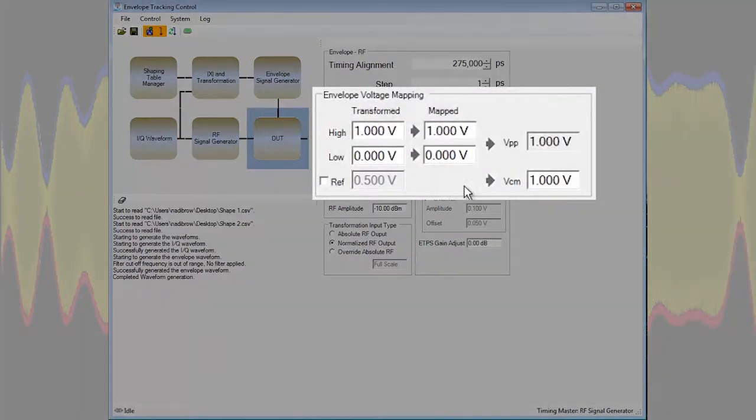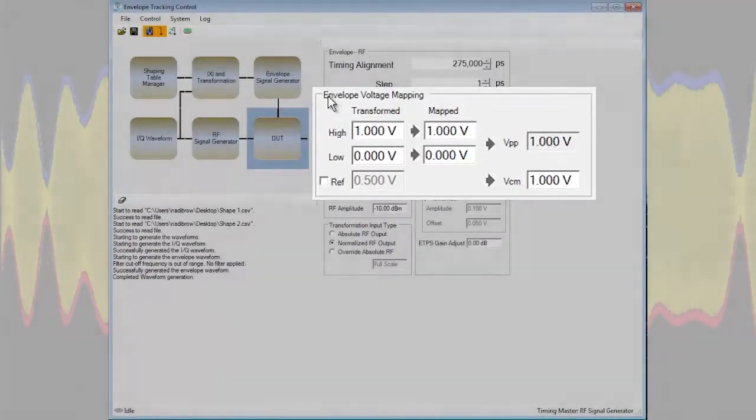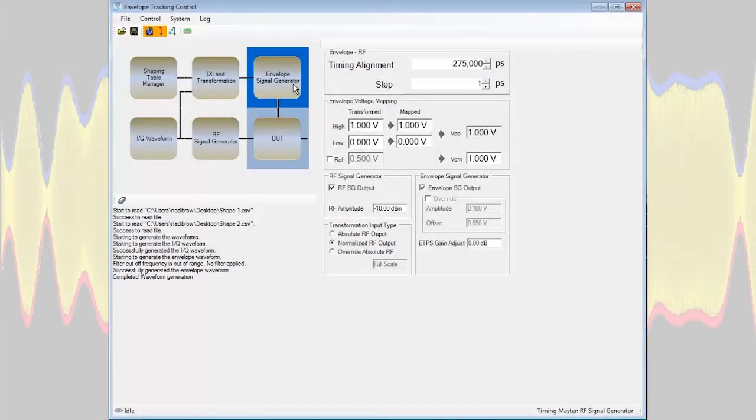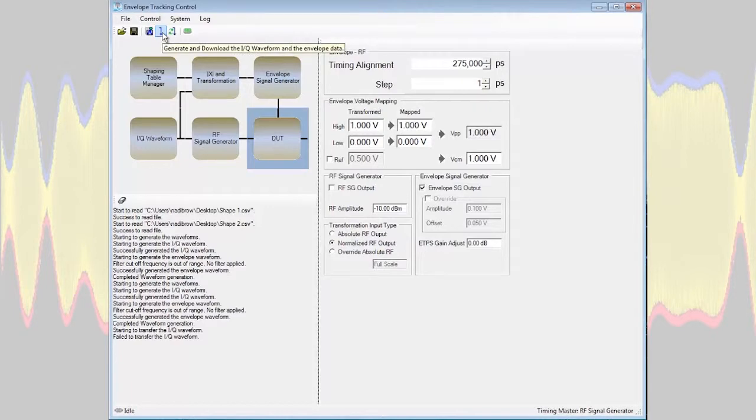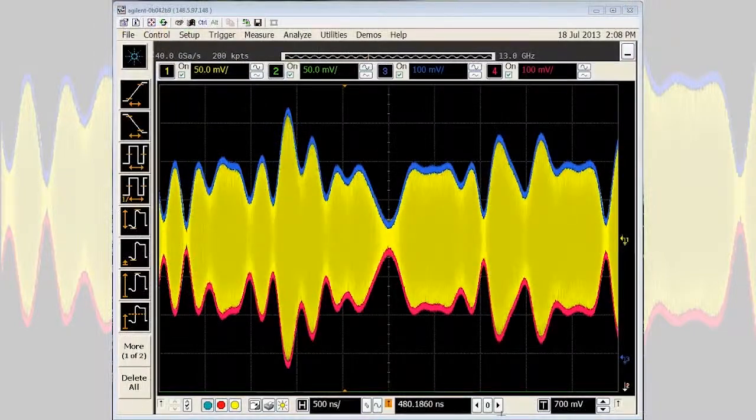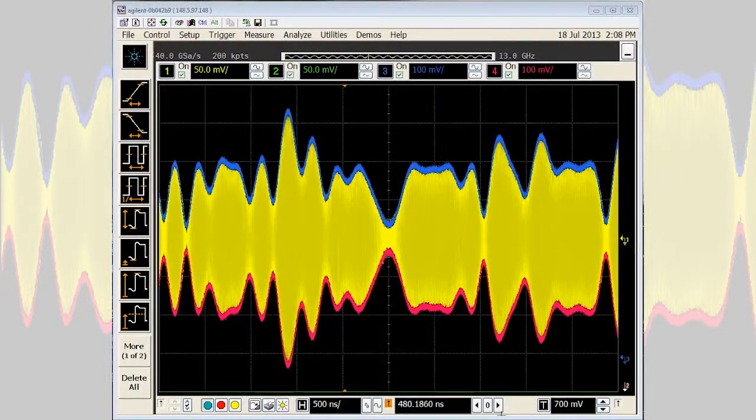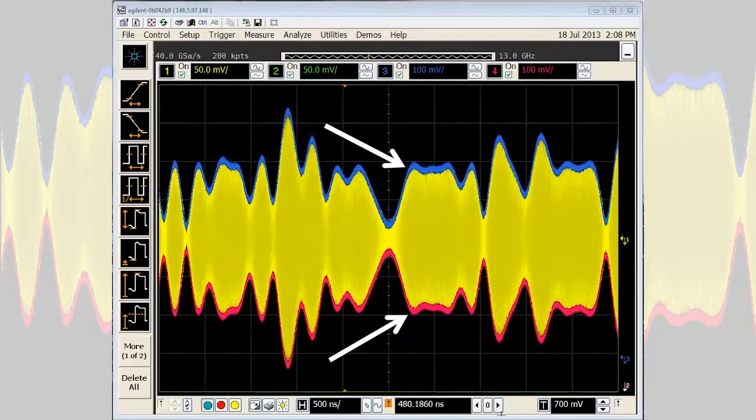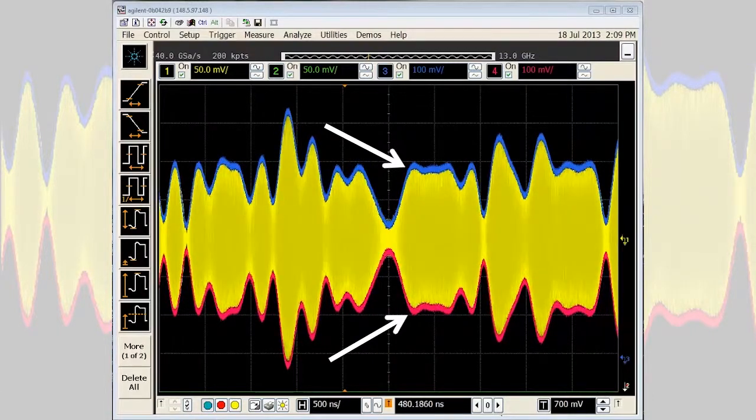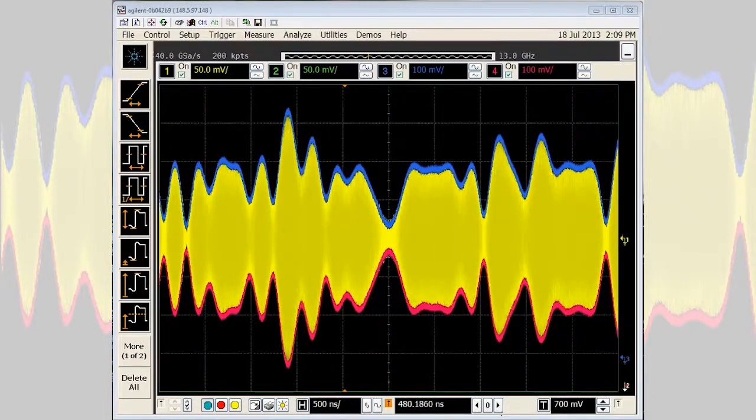Also I have control over the envelope voltages so this is very important to get the scaling right for the device under test that you're working with. Once we're satisfied with our configuration we press this button here which will generate and then download the signals into the MXG and also the 33500 series waveform generator. Now what we'll see on the scope now we have the yellow trace which is the RF signal. And then you also see the blue trace and the red trace. This is the envelope signal and there's two of them there because we have differential outputs. This follows exactly the envelope of the RF waveform.